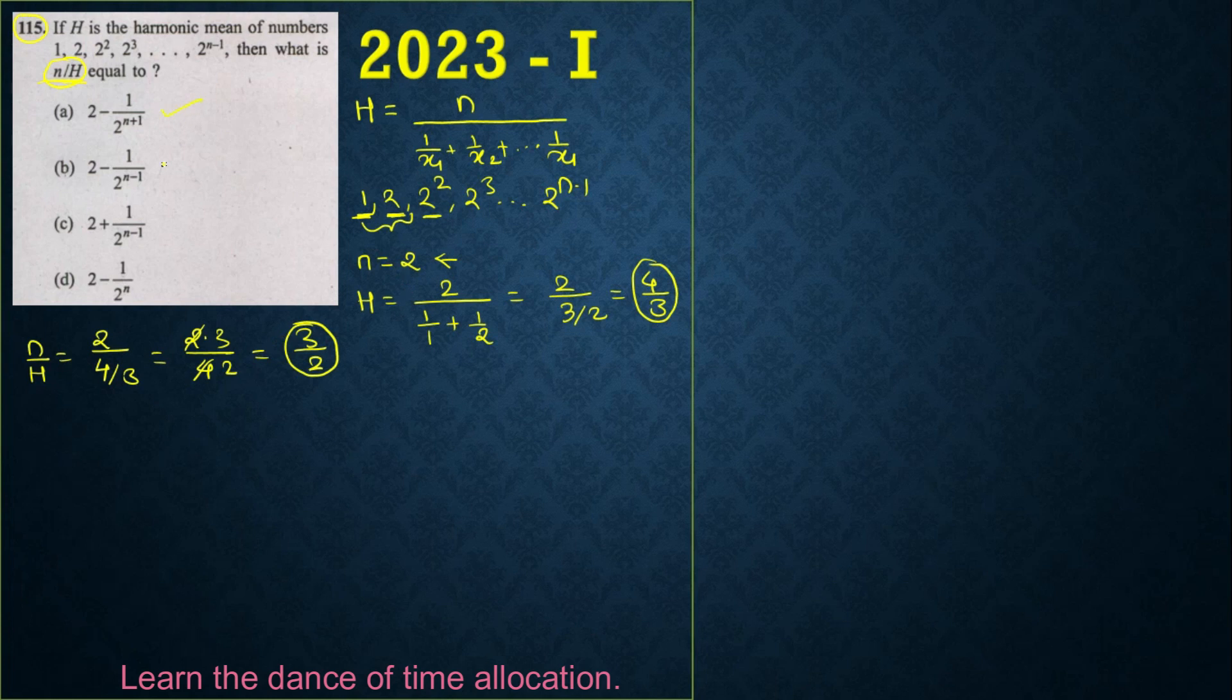Now cross verify which option will give you 3 by 2. If I substitute in option B, B gives me 2 minus 1 by 2 raise to n minus 1. We have taken n as 2, so 2 raise to 2 minus 1 becomes 2 raise to 1. If we solve this, 2 into 2 is 4 minus 1 by 2, which is 3 by 2.